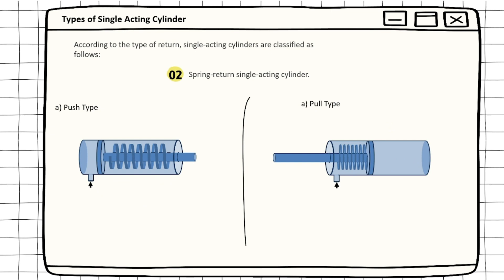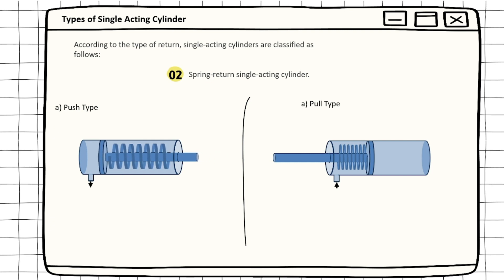Going with the spring return single acting cylinder, it also has two types: push type and pull type. In push type, when the pressure is applied to the cylinder it extends, and when the pressure is removed from the cylinder, it retracts with the help of spring return. In pull type, when we apply pressure it retracts the spring, and when we remove the pressure it gets extended with the help of the spring.